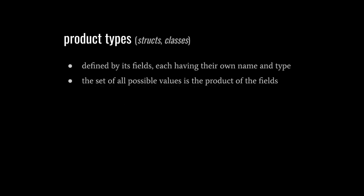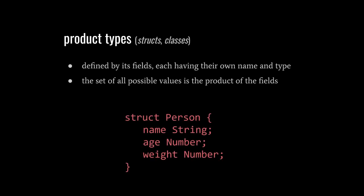The most common kind of user-defined types are formally called product types, but informally are called structs, short for structures, or classes, depending upon the language. A product type aggregates data elements called fields, which each have a name and a type. For example, we can define a product type we'll call person, which is made up of three fields: a string called name, a number called age, and a number called weight. The order of the fields, by the way, is not significant.